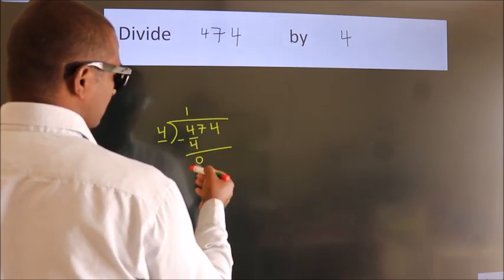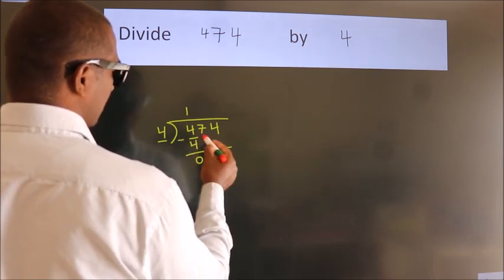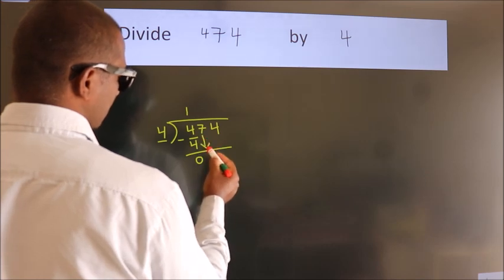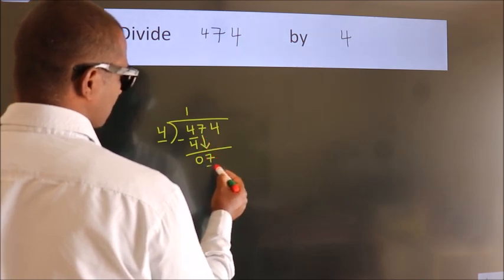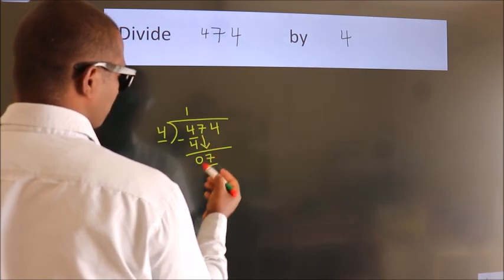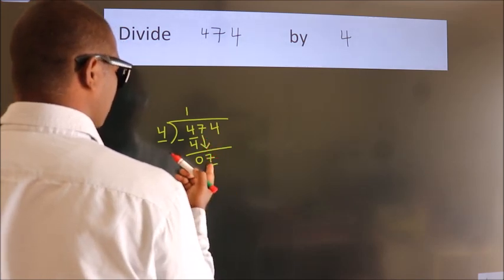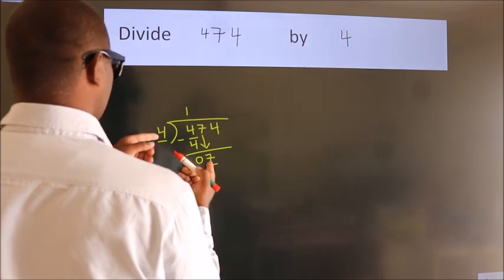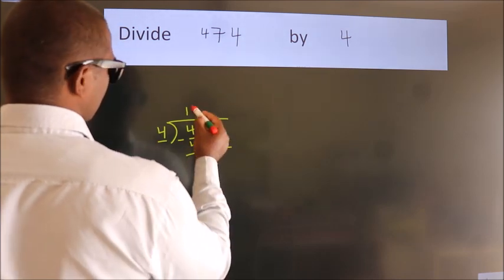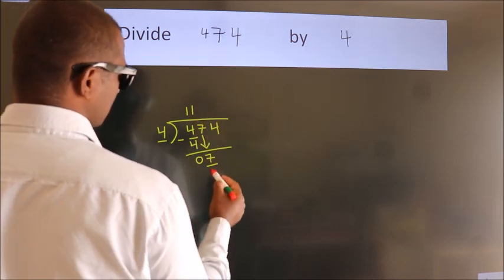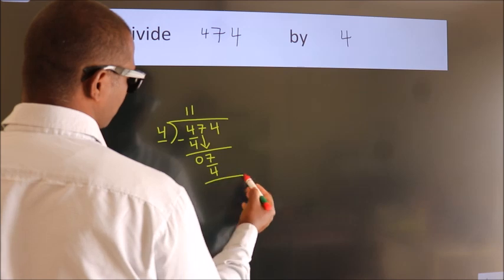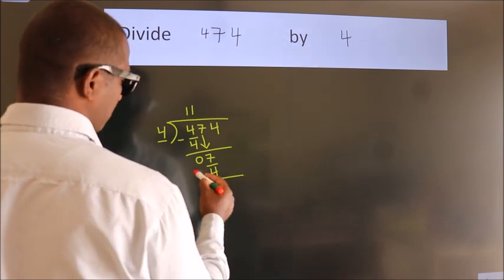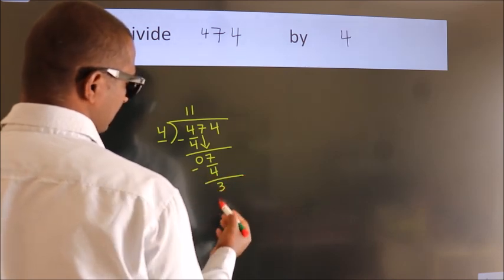After this, bring down the beside number. So 7 comes down, so we have 7. A number close to 7 in the 4 table is 4 once, which is 4. Now we subtract, we get 3.